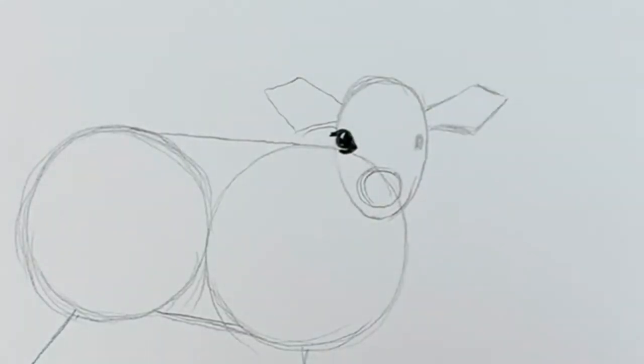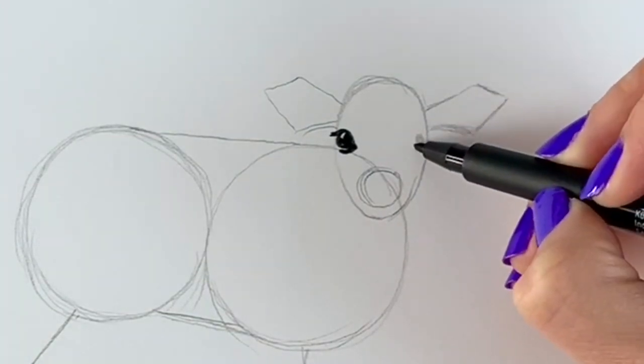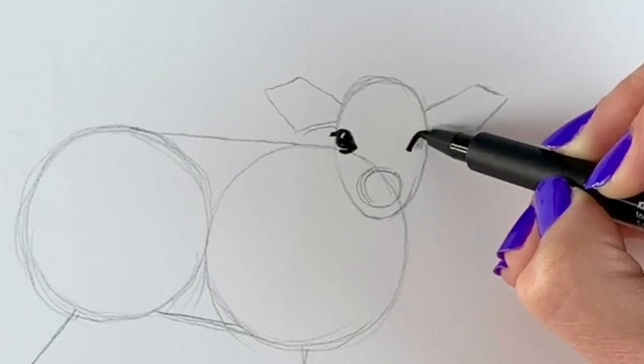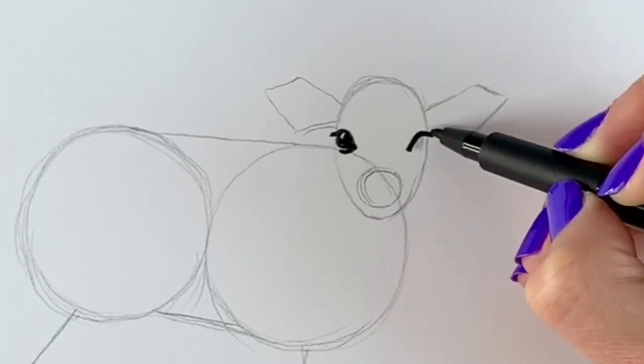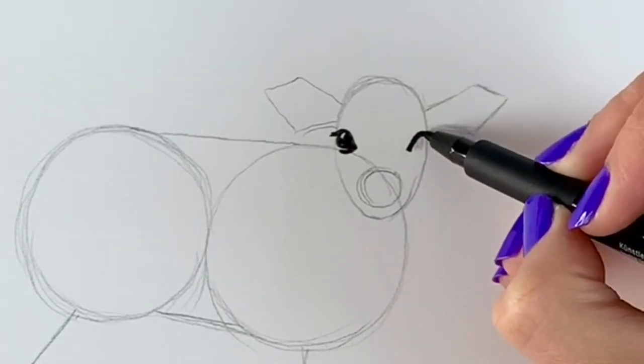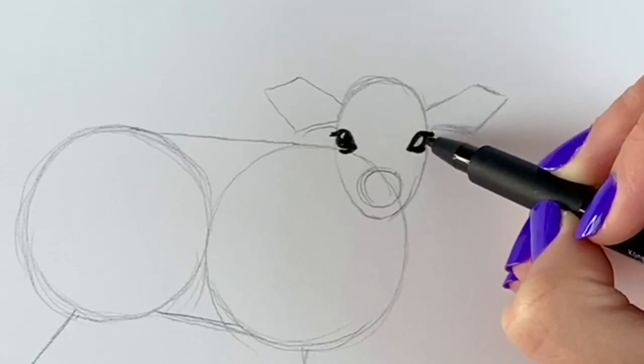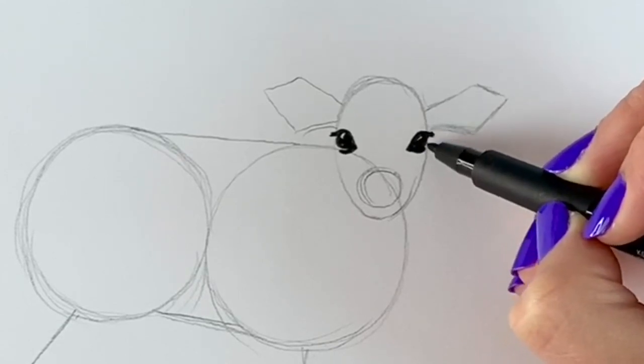There we go, that's the first eye. Then I'm going to do the other eye on this side. Try and make them parallel so that they're in line. And then don't forget the lovely eyelashes. And then a little bit of light showing like on the other one.